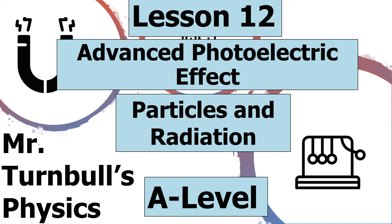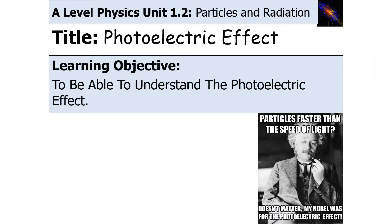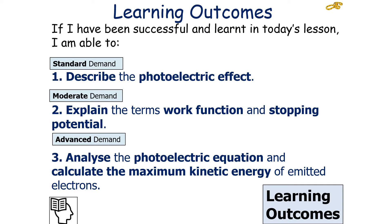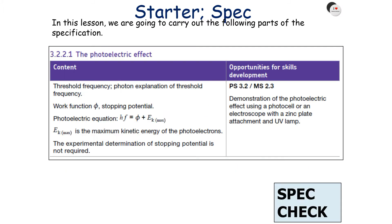Hello and welcome to today's lesson where we're going to look at the advanced aspects of the photoelectric effect, which is part of the particles and radiation topic in AQA A-level physics. In today's lesson we're going to look at understanding what the photoelectric effect is. If we've been successful, we should be able to describe the photoelectric effect, explain the terms work function and stopping potential, and analyse the photoelectric equation and calculate the maximum kinetic energy of emitted electrons. This is part of AQA A-level physics specification 3.2.2.1, the photoelectric effect.